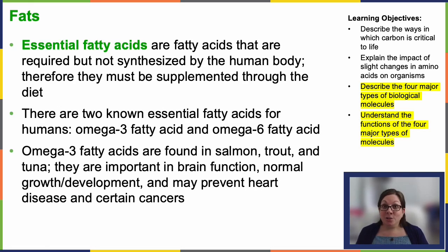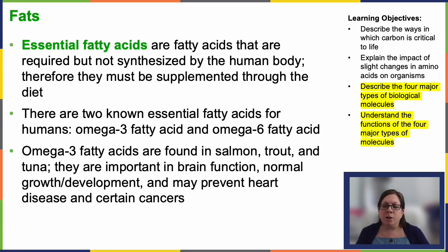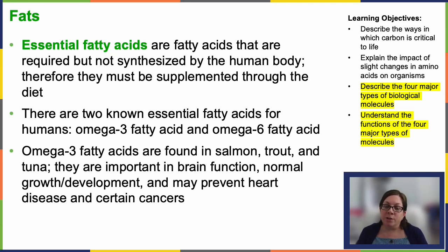Essential fatty acids are the really good ones. They are required for your body to function properly, but our bodies cannot synthesize them, which means we have to get them through diet. There are two known essential fatty acids for humans: omega-3 fatty acid and omega-6 fatty acid. Omega-3s are found in salmon, trout, and tuna. They're important for brain function — very important for the developing brain — for normal growth and development, and may help prevent heart disease and certain cancers. Your omega-3 to omega-6 ratio is also important. If you've had blood work done recently, pull up your report because it'll show these and you can look at the ratios.